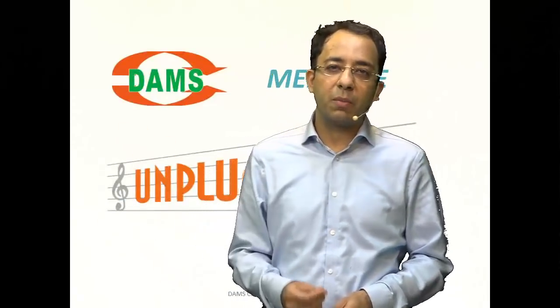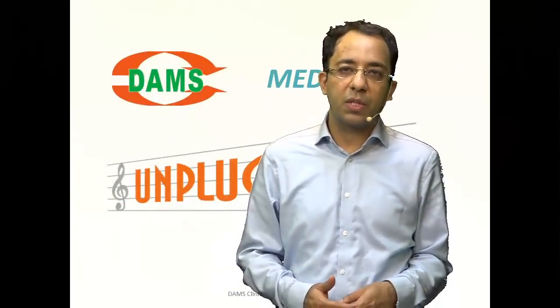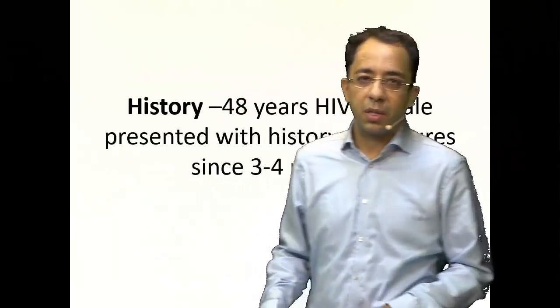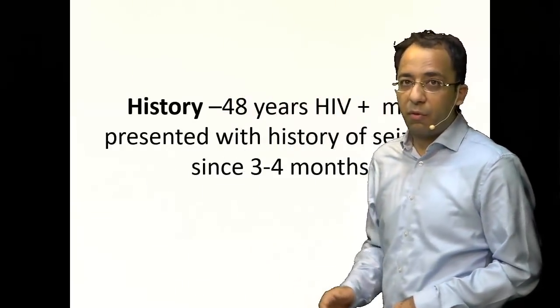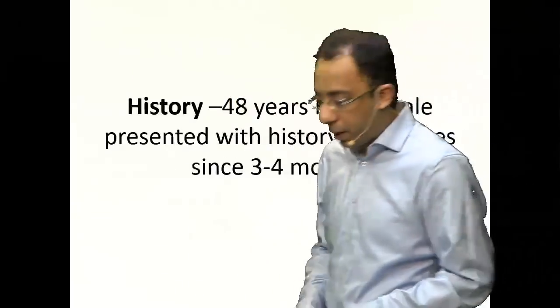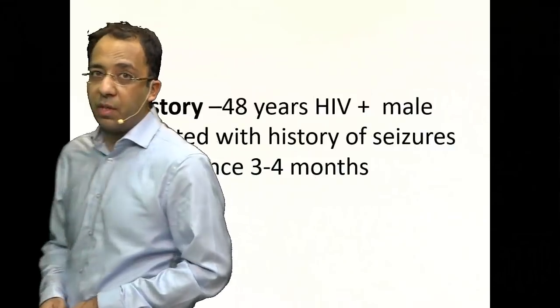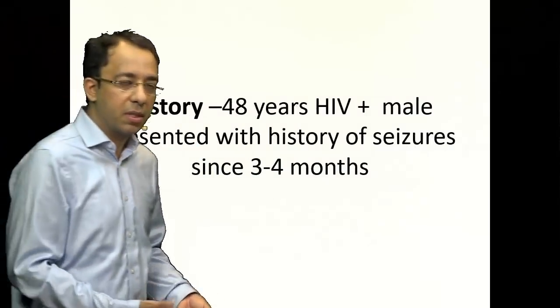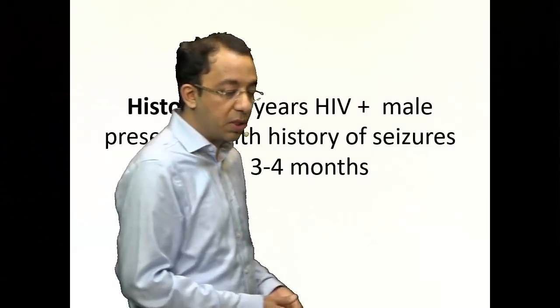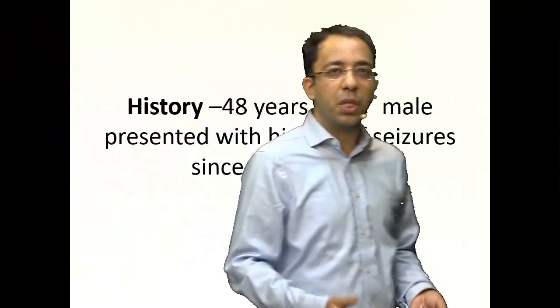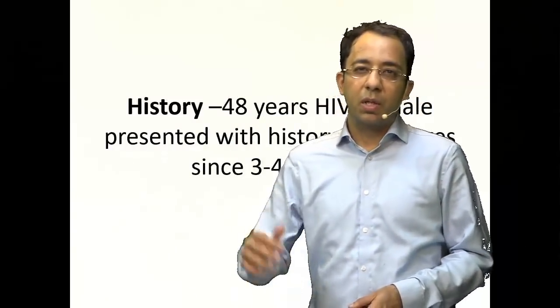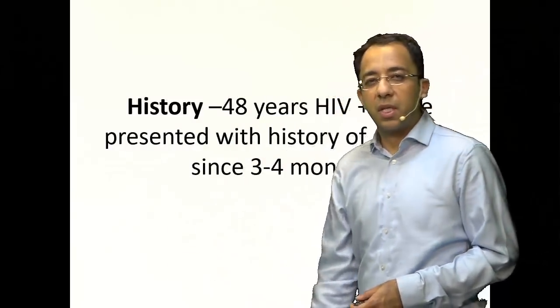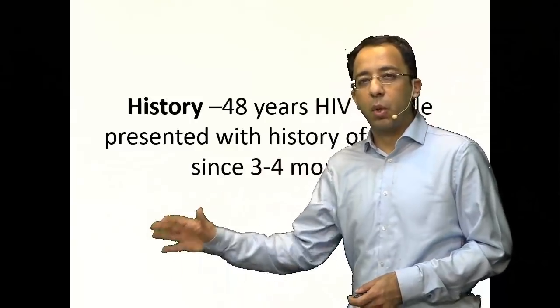Let's look at the question and understand the case. This is a 48-year-old man who is HIV positive with a history of seizures for the last three to four months — a neurological complaint in an HIV positive, immunocompromised patient.